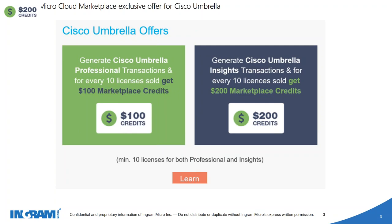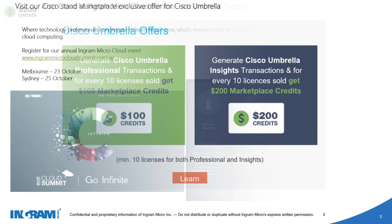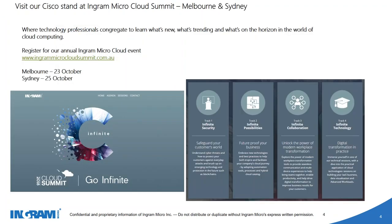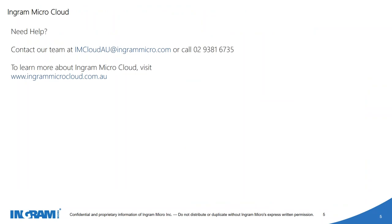Let us know if you have any questions or want to look at that offering in more detail and we can help you out. The other exciting thing coming up in October in Melbourne and Sydney is our annual cloud summit event. We had 500 plus attendees last year and we're expecting the same if not more this year. If you haven't received the details, just go to ingrammicrocloudsummit.com.au and register. If you have any questions or need help, please reach out to our cloud team or give us a call.